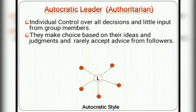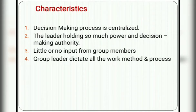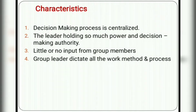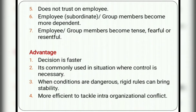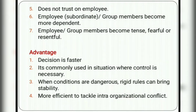Characteristics of the autocratic leader: the decision-making process is centralized — the leader holds much power and decision-making authority. There is little or no input from group members. The group leader dictates all work methods and processes. This leader does not trust employees, which is why members are not involved in decisions. Employees or group members become more dependent because they just follow whatever instructions are given.